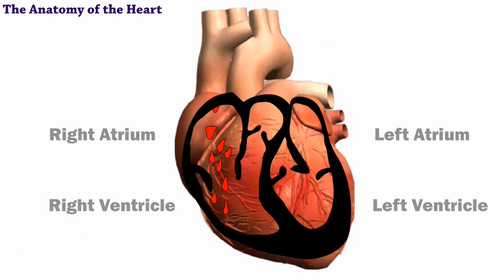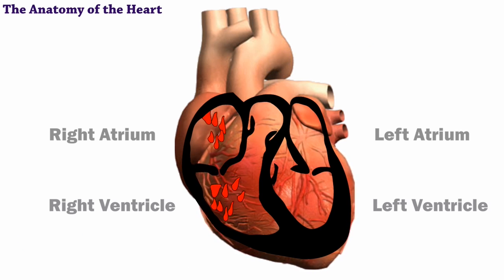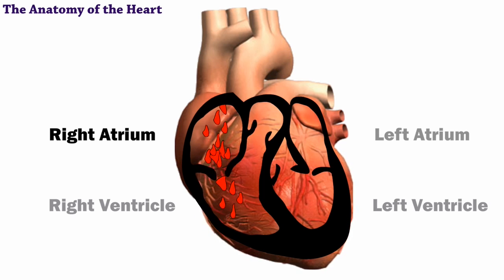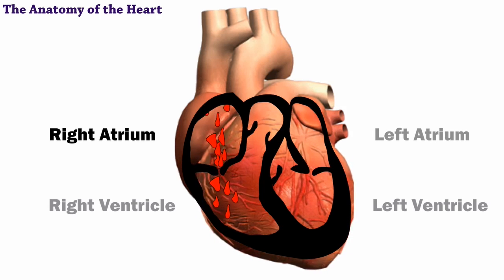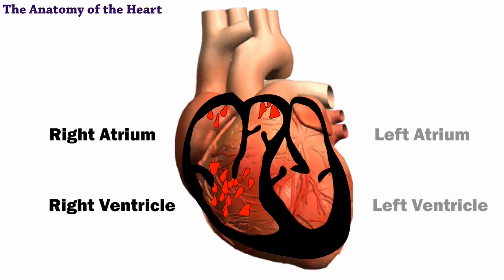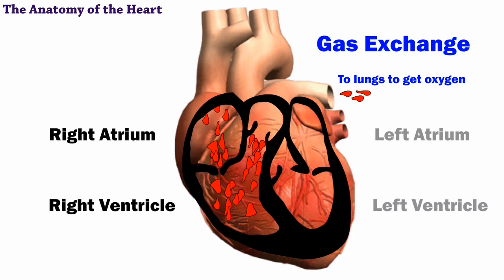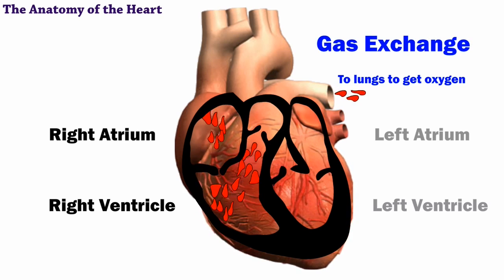Blood returning from your body's organs and tissues enters the right atrium. Because this blood has provided oxygen to your body, it's very oxygen-poor. It moves to the right ventricle and out to the lungs to pick up more oxygen in a process called gas exchange.